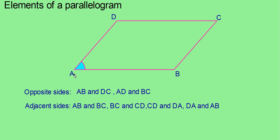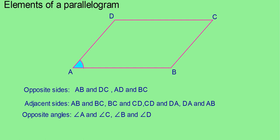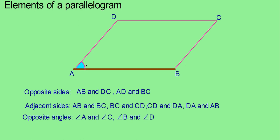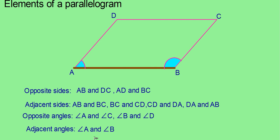Now consider the angles. Consider angle A — the angle opposite to A is angle C. So angle A and angle C we can call a pair of opposite angles. Now consider side AB. At one end there is angle A, and at the other end there is angle B. The two angles at the ends of a side we can call adjacent angles. One pair is angle A and angle B. There are 4 pairs of adjacent angles in a parallelogram.